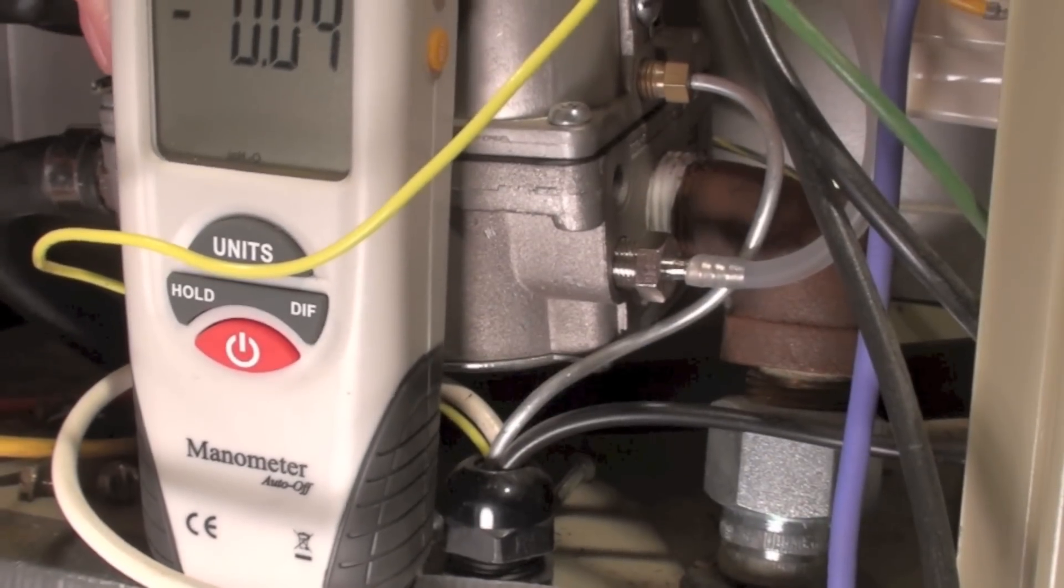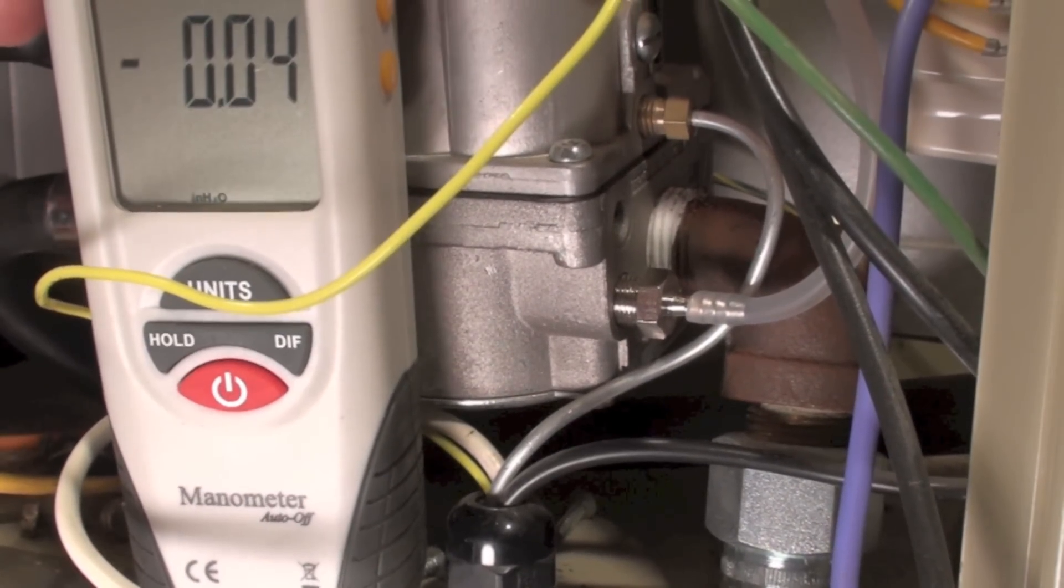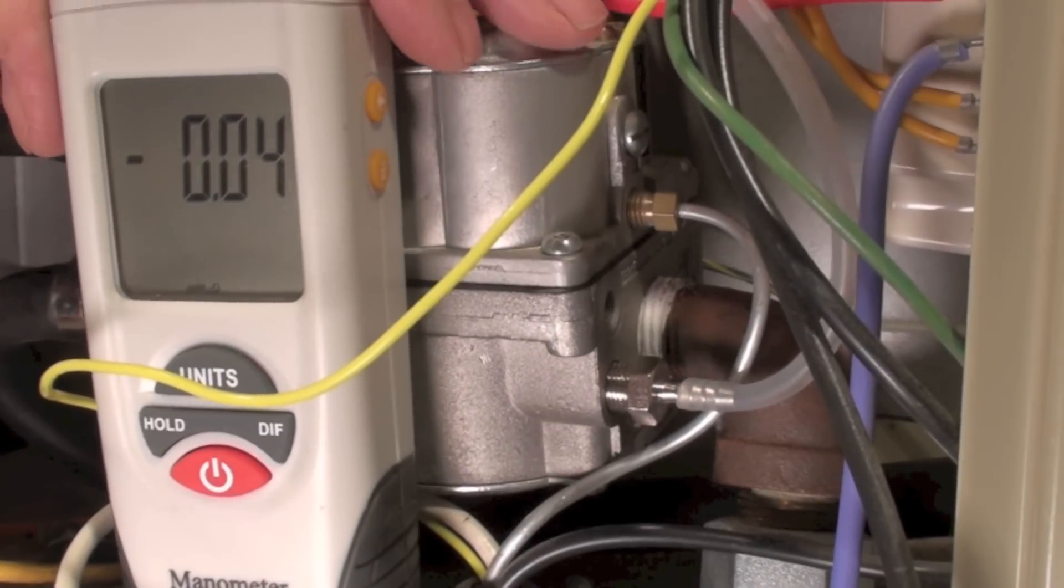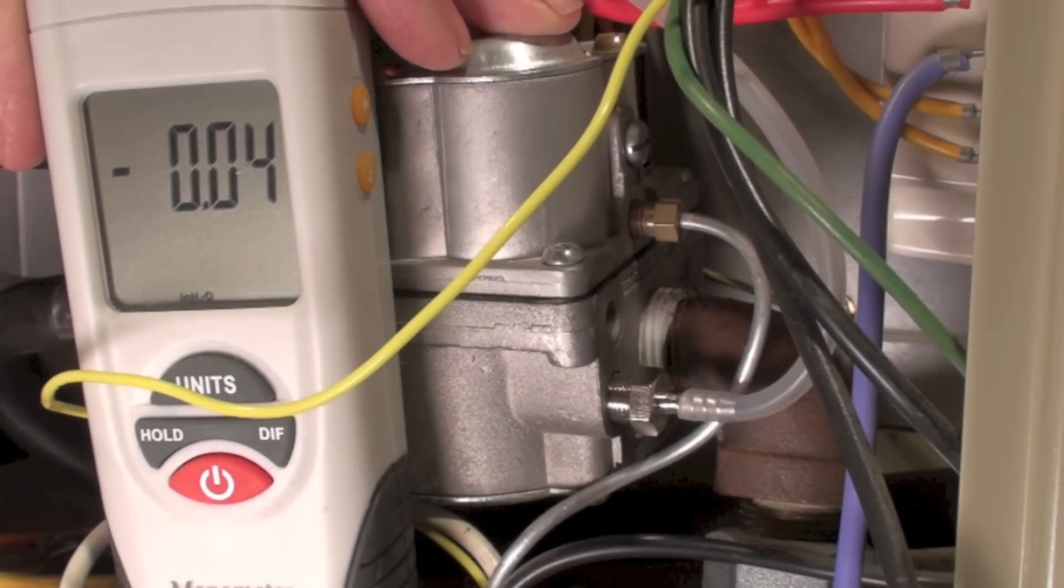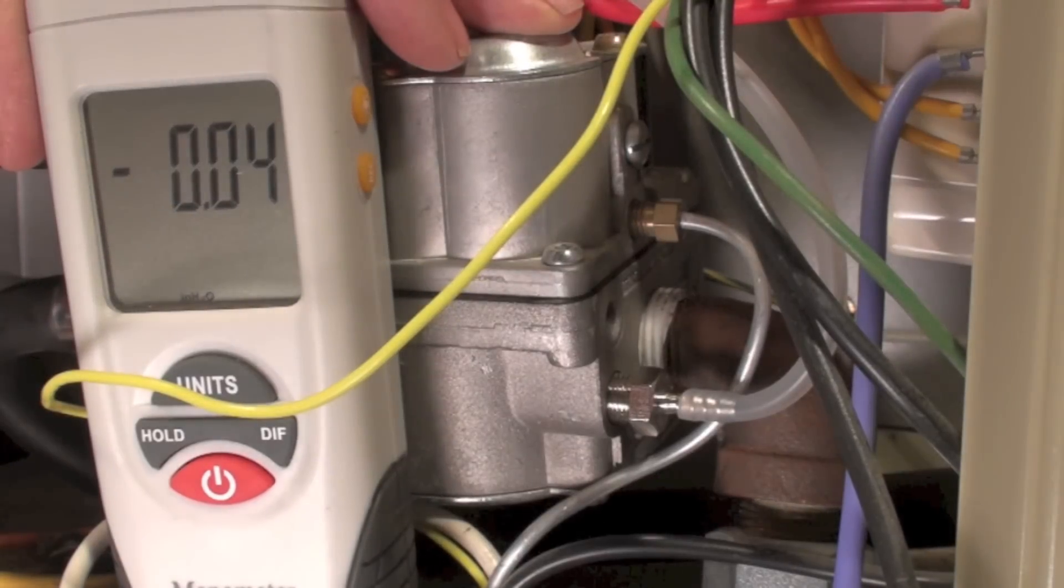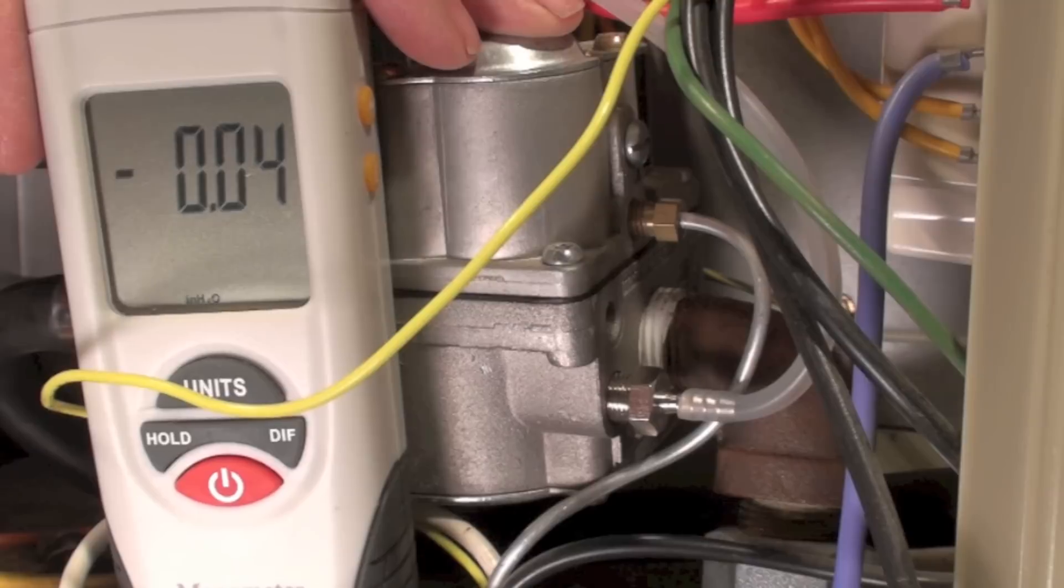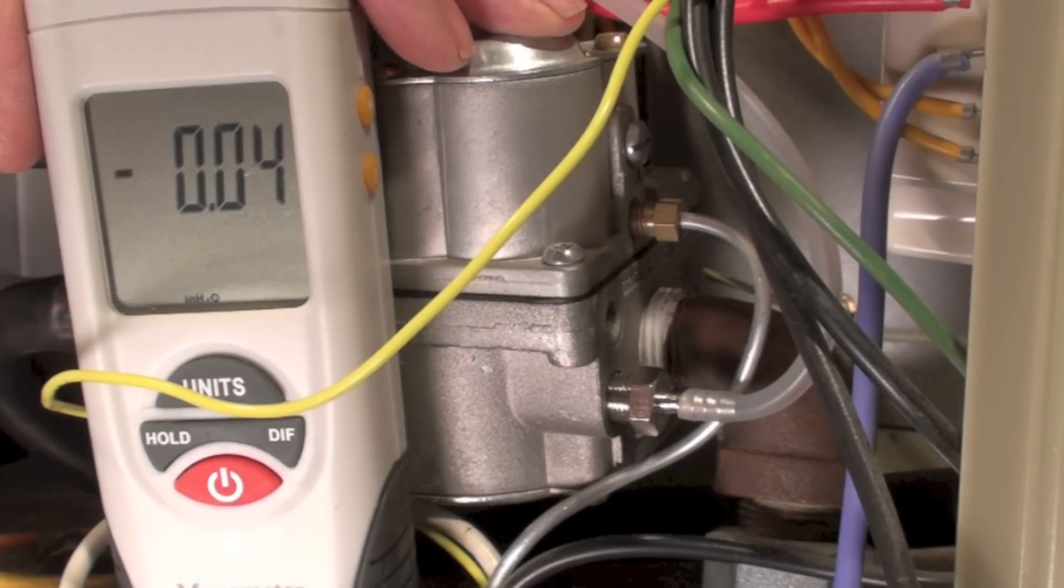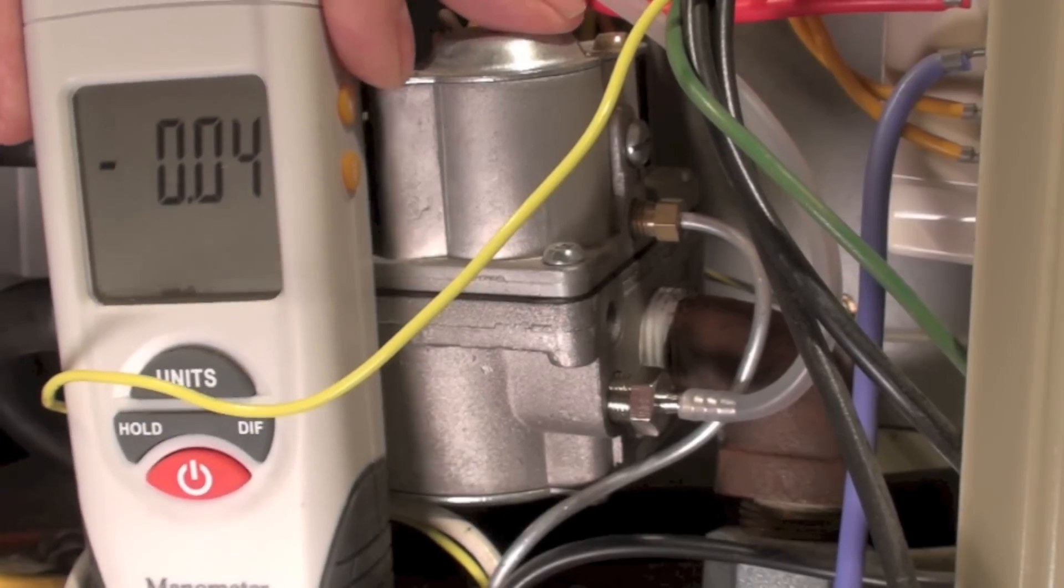When we get manifold pressure on this thing, we have to reference the combustion chamber because that's where the gas is going. So the regulator has to have an ambient pressure that is the same as the combustion chamber. Now I'm going to take that off so that it references outside air while this thing is running and you can see the difference.